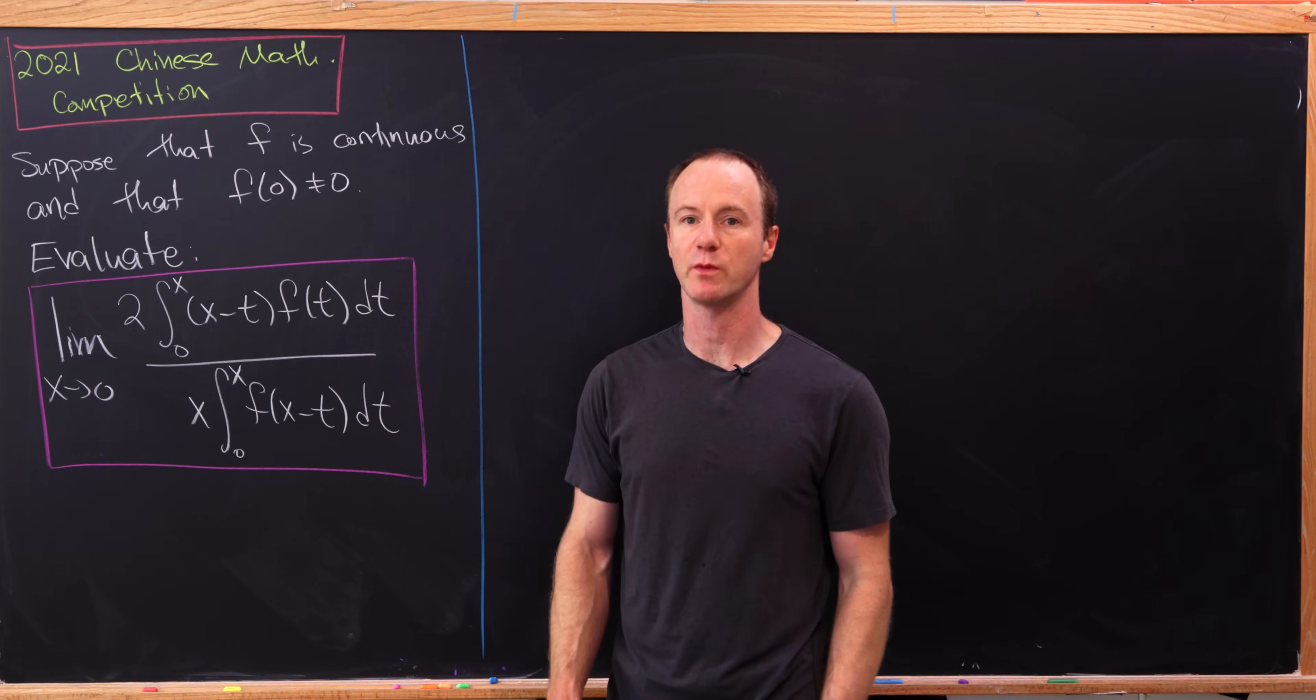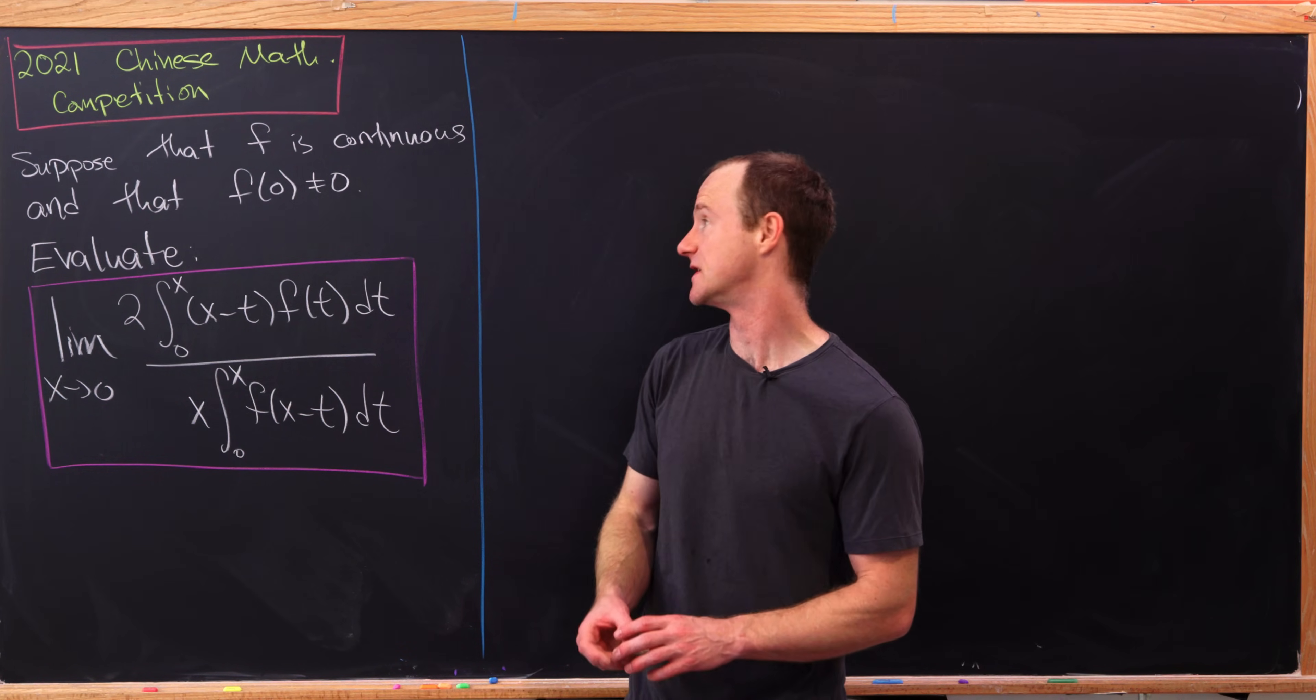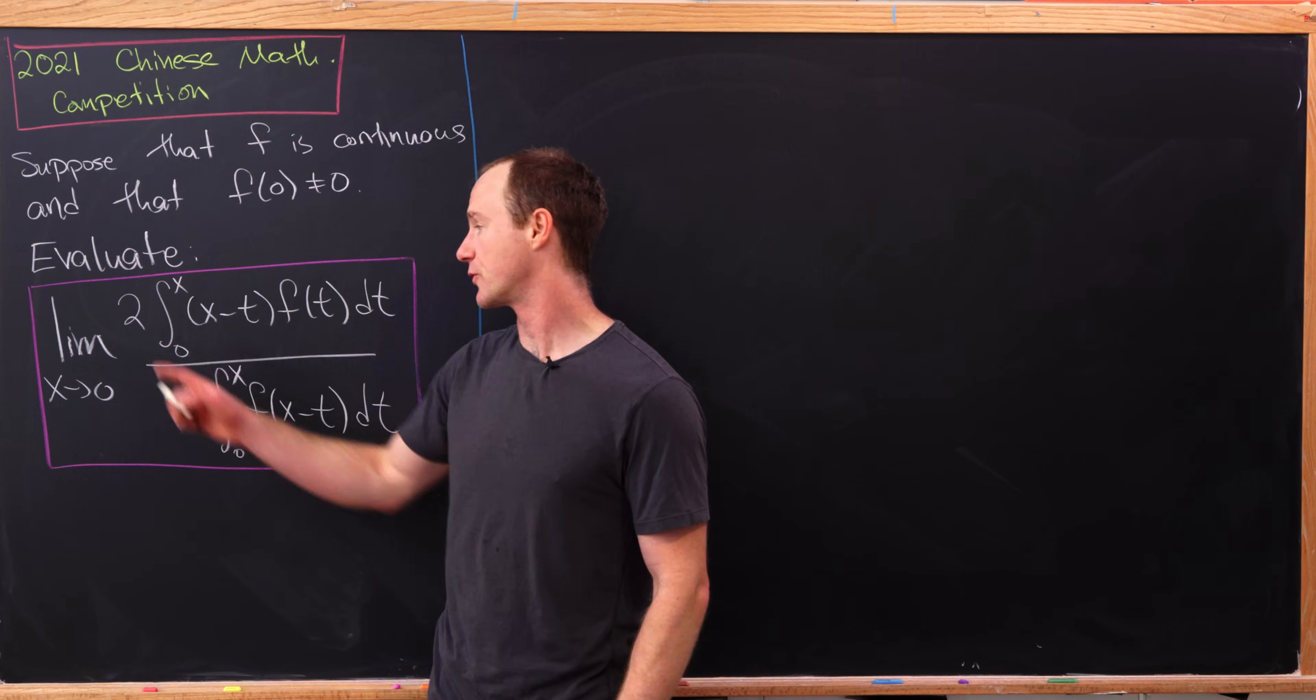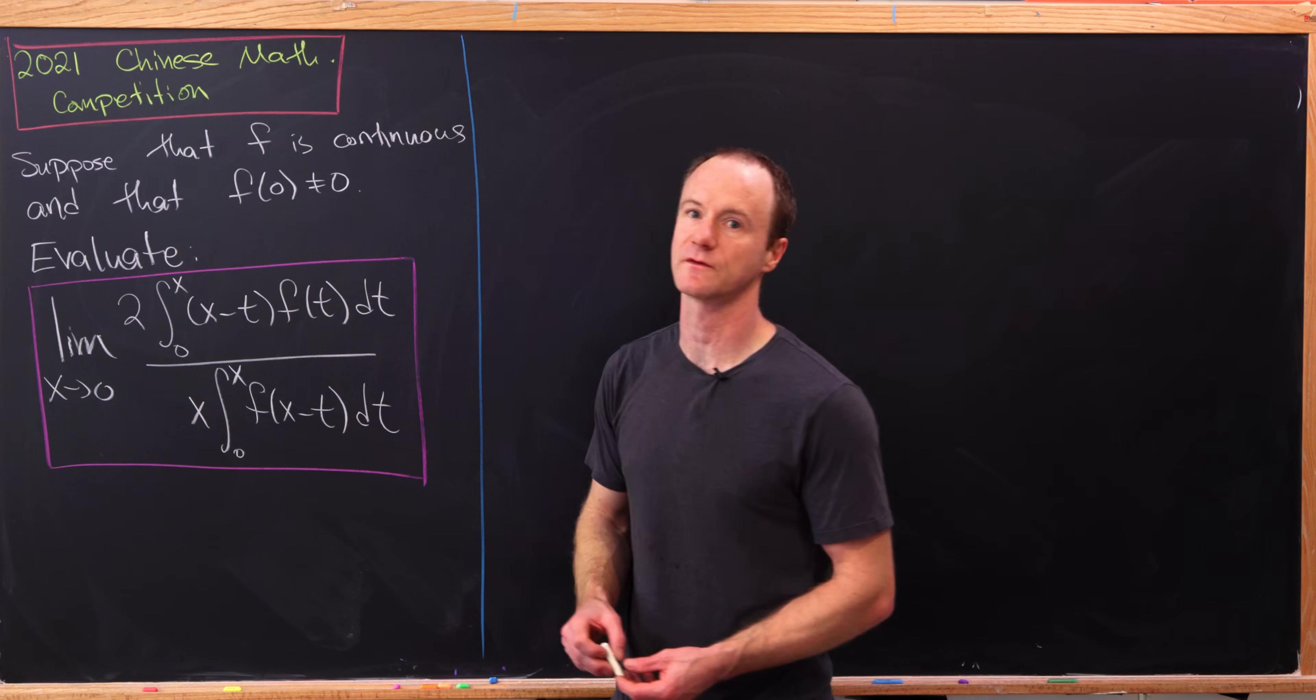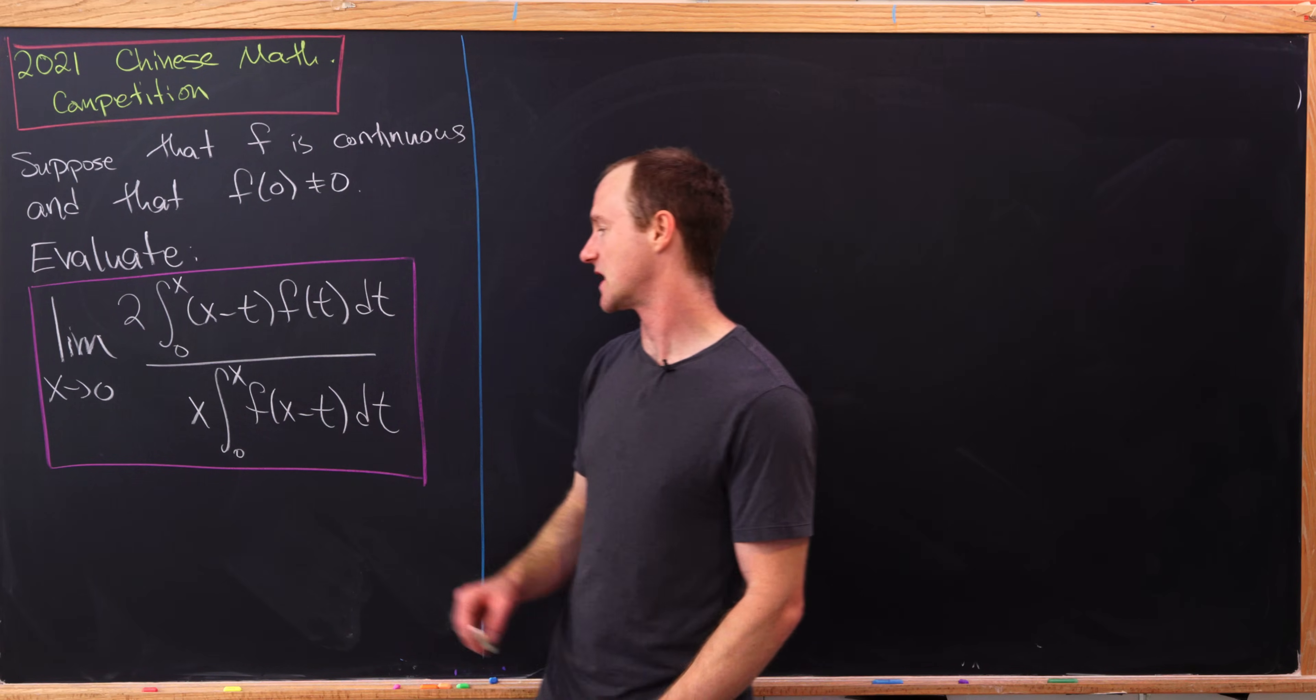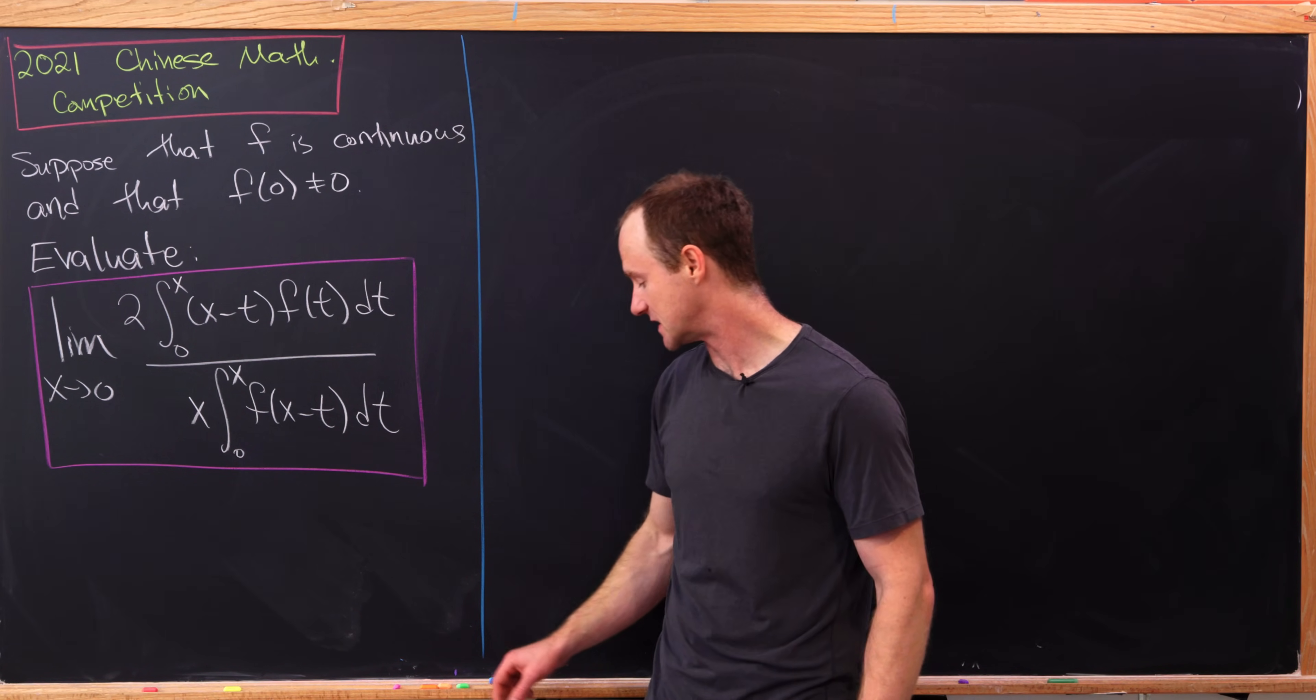Okay, so let's see what we've got. We want to suppose that f is continuous and that f evaluated at zero is not zero. And then our goal is to evaluate the limit as x goes to zero of two times the integral from zero to x of x minus t f of t dt over x times the integral from zero to x of f of x minus t dt.